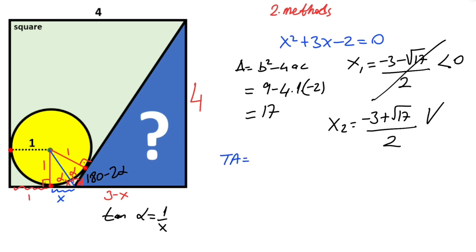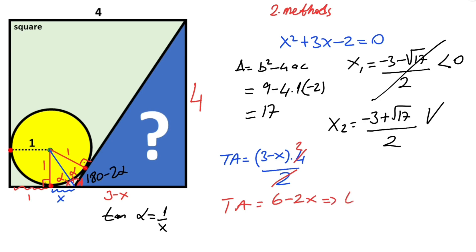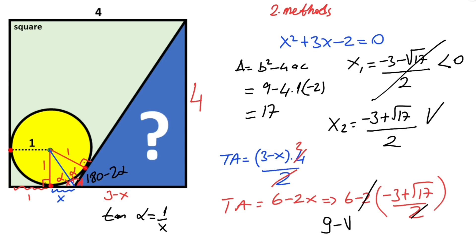The triangle area equals (3 minus x) times 4 over 2, which simplifies to 6 minus 2x. Since x equals (minus 3 plus root 17) over 2, substituting gives the blue shaded area equal to 9 minus root 17 square units.